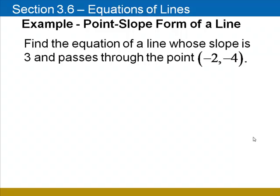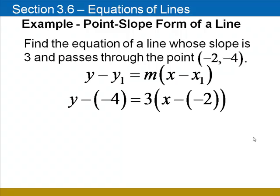Find the equation of a line whose slope is 3 and passes through the point negative 2, negative 4. In this example we know that m equals 3, x₁ equals negative 2, and y₁ equals negative 4. We'll substitute into the point-slope form, replacing y₁ by negative 4, m by 3, and x₁ by negative 2.